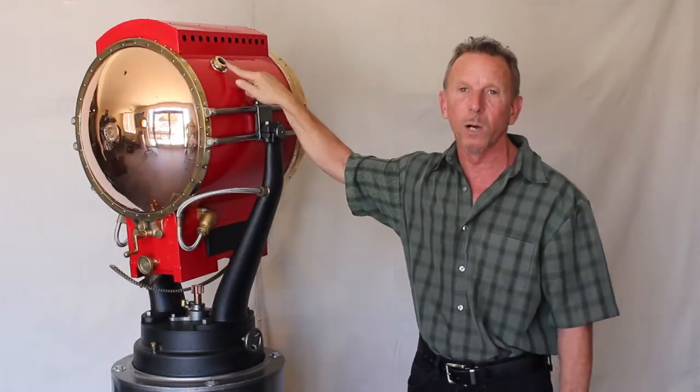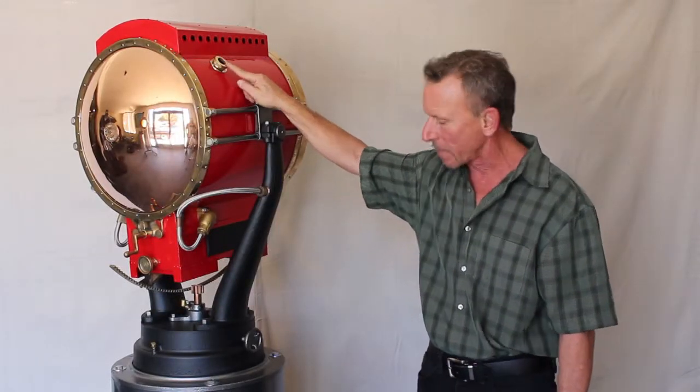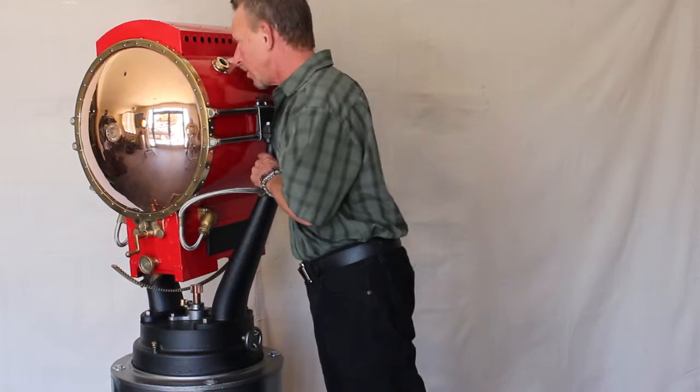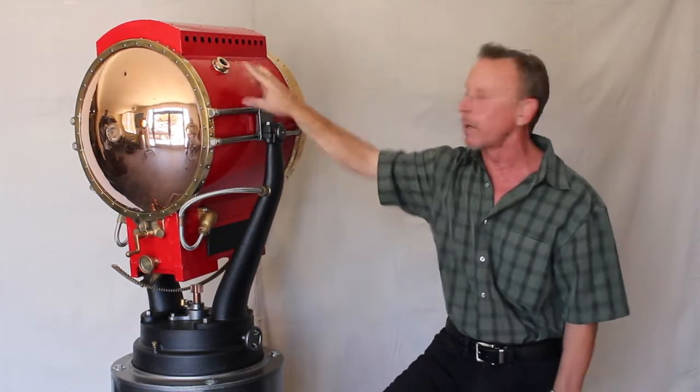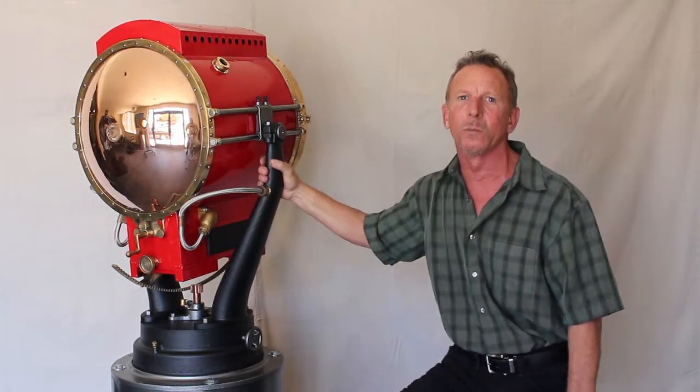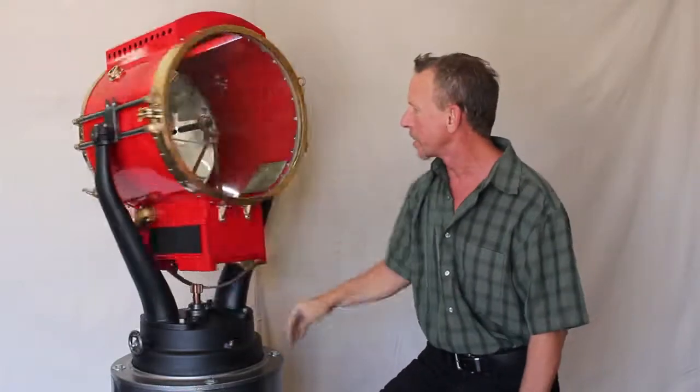These are the sight windows that have welding glass in them so the operator could stand and view it without burning his eyeballs out. It's about 600 million candlepower when in full operation.